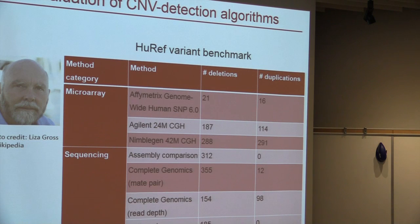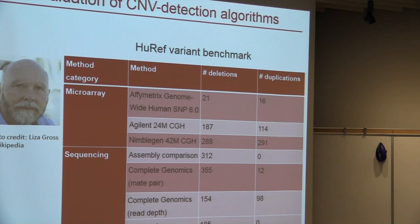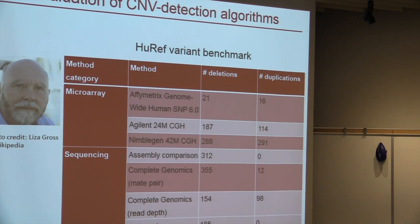Multiple different methods — both microarray-based and sequencing-based — were used to find CNVs in Craig Venter's genome, which is a primary advantage of this benchmark. Some CNV detecting tools, when evaluating their methods, used data from the thousand genomes project, but the difficulty is that the same types of technology used to find the variants are also being evaluated. In our case, using different method types including microarrays and assembled sequence comparison means there's less bias when evaluating whole genome sequencing methods.